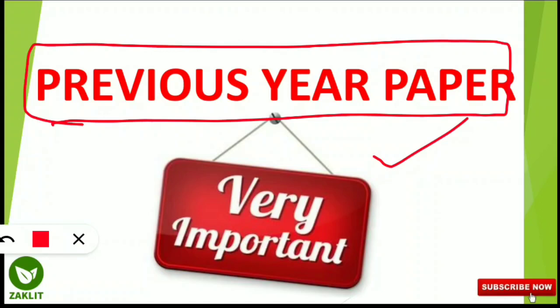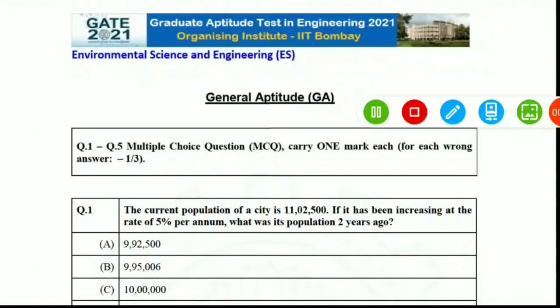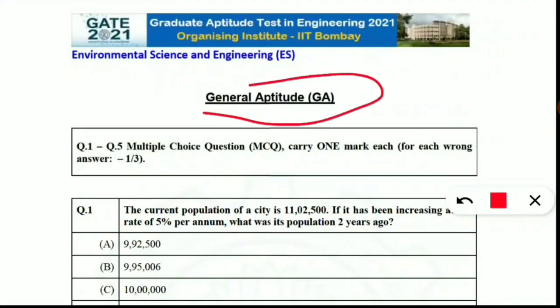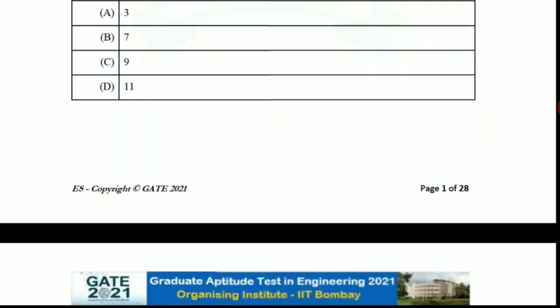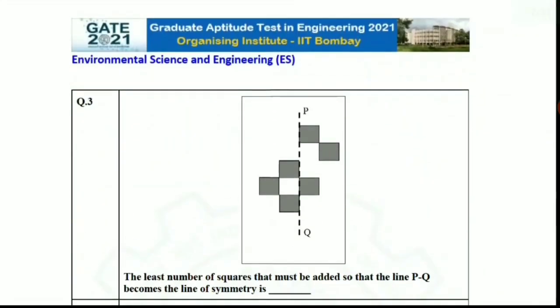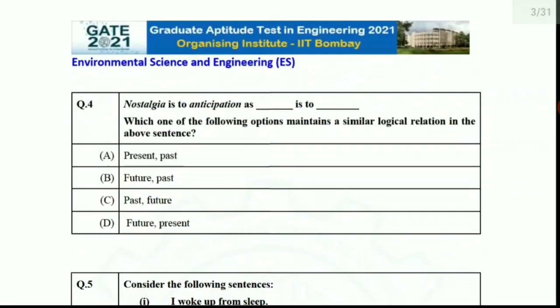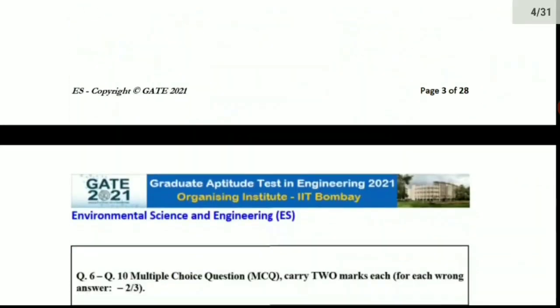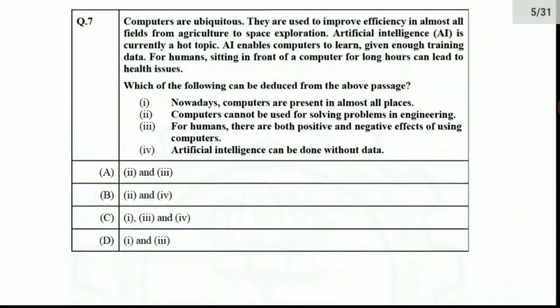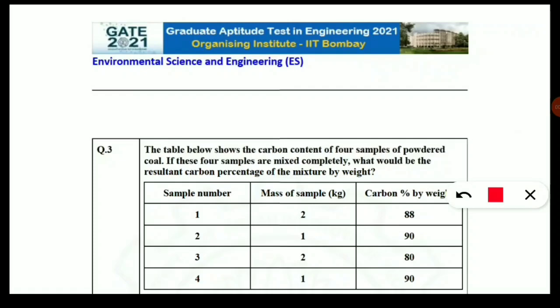Let's look at how the previous year paper looks. This is the 2021 GATE Environmental Science and Engineering paper. First is the General Aptitude section — there are questions from mathematics, logical reasoning, and mirror image/symmetry identification. You have to practice the English part and all of General Aptitude. After General Aptitude, the main subject paper is Environmental Science and Engineering.